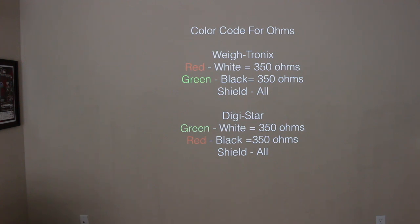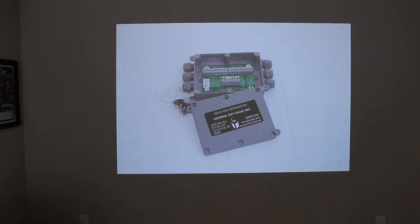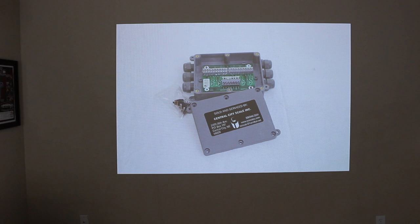The junction box would look something like this for a spring-loaded one. This is a Weigh-Tronix one. The Digi-Star one is fairly similar. You'll see that it has a board on the inside and then it has a place for all the connectors. On the back side of this top lid, you will see the color code.